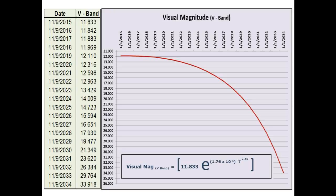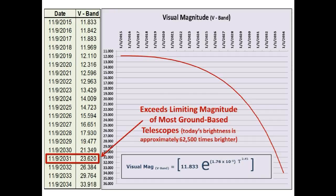Going even further into the future, we get this curve and the corresponding calculated data points. Our prediction is that for the vast majority of ground-based telescopes, our original date of 2031 still holds — only the largest state-of-the-art telescopes with long exposure times will be able to faintly see Tabby Star. Today's brightness of Tabby Star will be 62,500 times brighter than it will be in 2031.